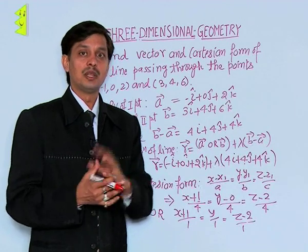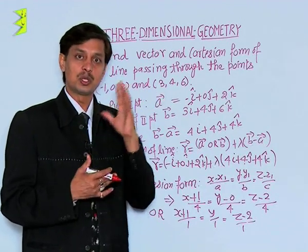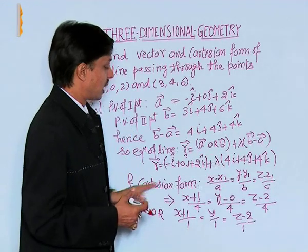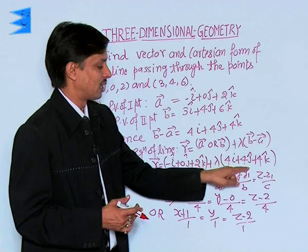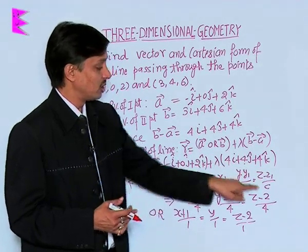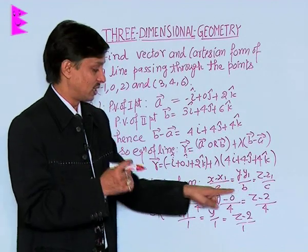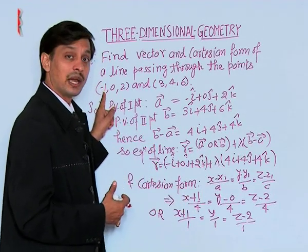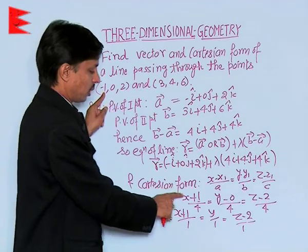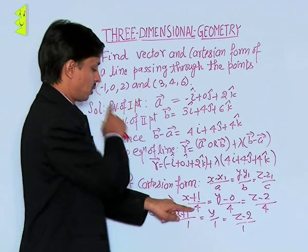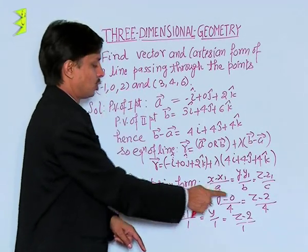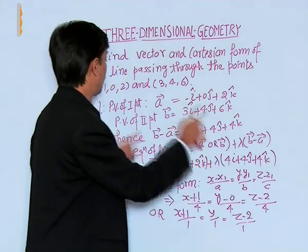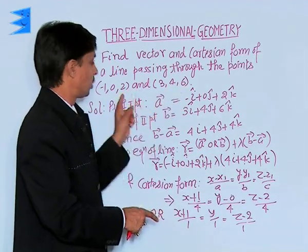To obtain the Cartesian form, the formula is: (X minus X1)/(X2 minus X1) = (Y minus Y1)/(Y2 minus Y1) = (Z minus Z1)/(Z2 minus Z1). So substituting: X minus (-1) over (3 minus (-1)) = 4; Y minus 0 over (4 minus 0) = 4; Z minus 2 over (6 minus 2) = 4.